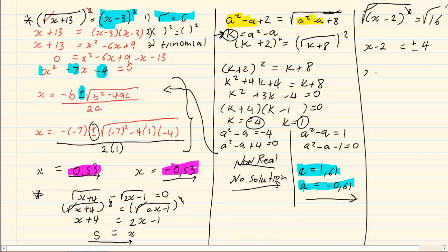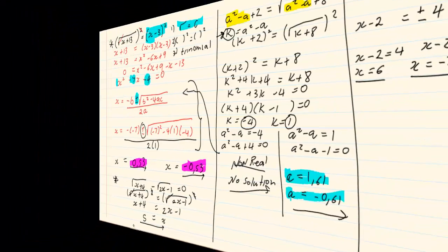Not just plus 4. That would give us two equations. x minus 2 is equal to 4 and x minus 2 is equal to negative 4. We solve each equation as a linear equation. We got x is equal to 6 and x is equal to minus 2. Thank you for watching.